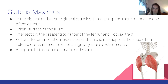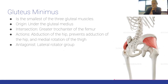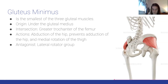The gluteus minimus is the smallest of the three gluteal muscles. Origin: gluteal surface of the ilium, beneath the gluteus medius. Insertion: greater trochanter of the femur. Actions: abduction of the hip, prevents adduction, and medial rotation of the thigh. Antagonist: lateral rotator group.